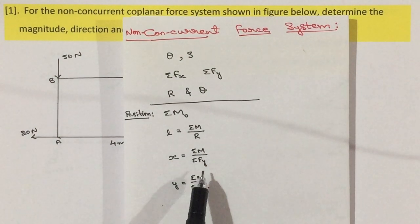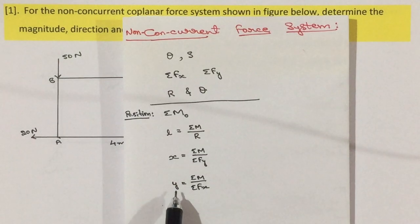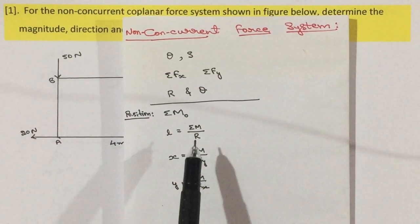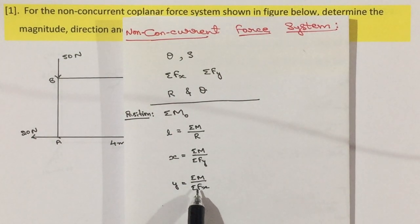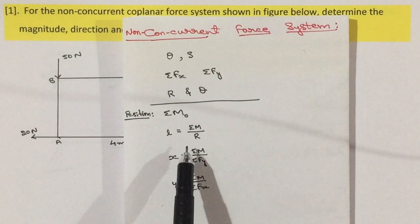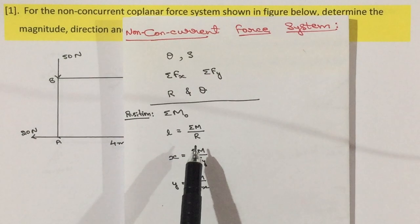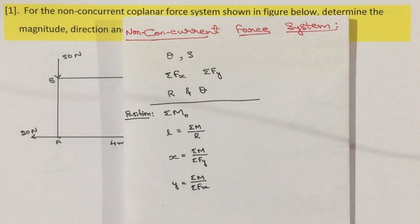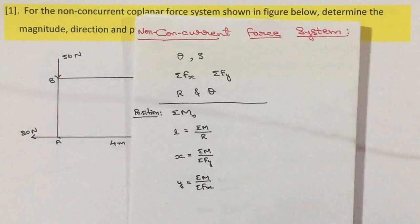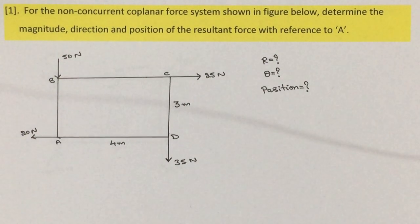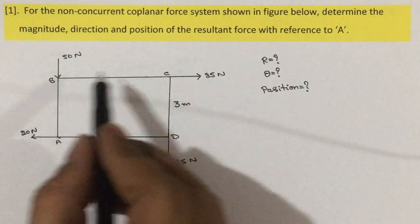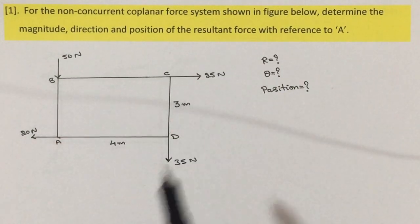The perpendicular distance is given by sigma M divided by R. The x-intercept is given by sigma M divided by sigma Fx, where sigma M, R, sigma Fy, and sigma Fx are already known — just substitute the values to get the answer. Here there are no inclined forces, so no need to calculate the angle or split them.